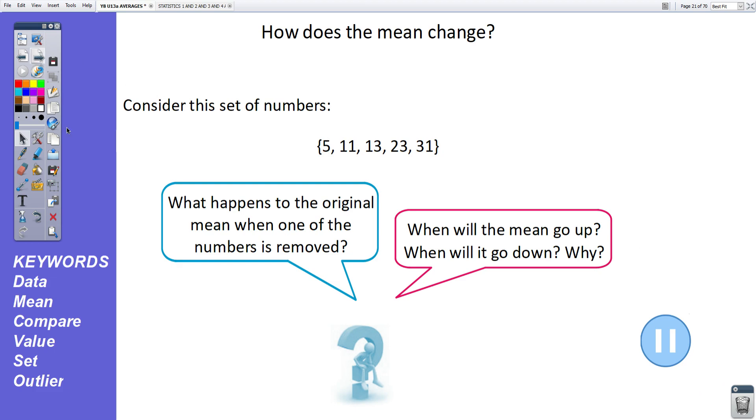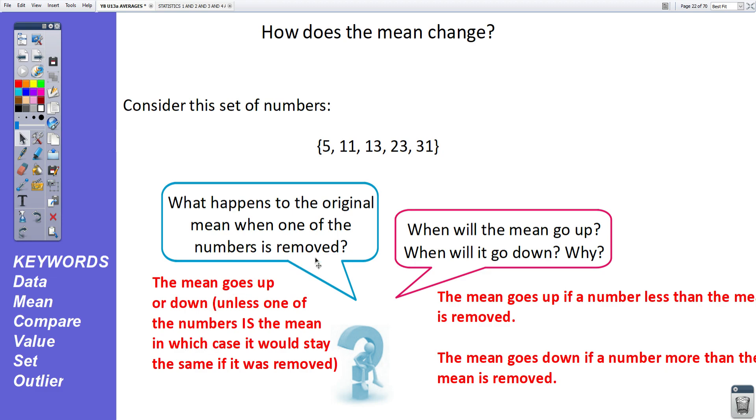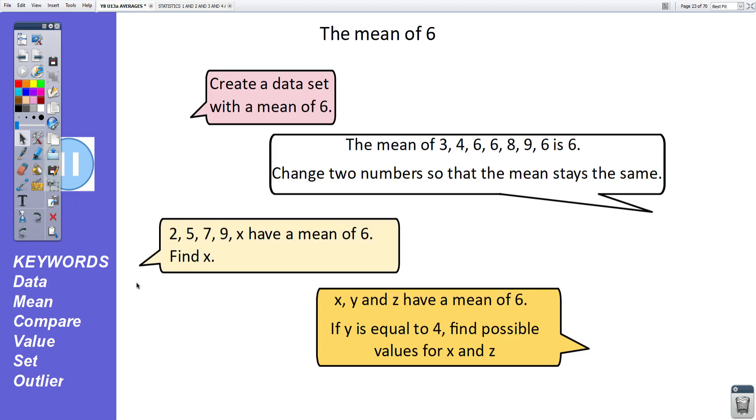Okay, let's have a look. So what happens to the original mean when one of the numbers is removed? Well, the mean will go up or down. Unless one of the numbers is actually the mean, in which case it would stay the same if that number was removed. But in general, the mean will go up or down. When will the mean go up? The mean will go up if a number less than the mean is removed. And the mean will go down if a number more than the mean is removed.